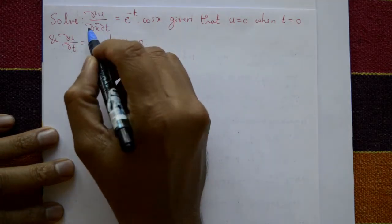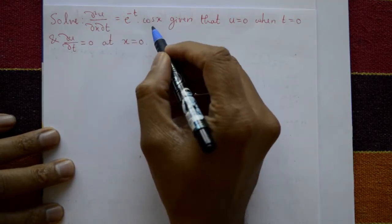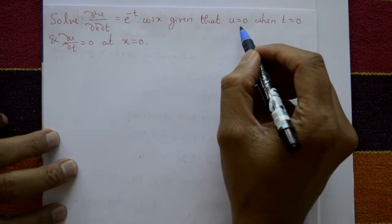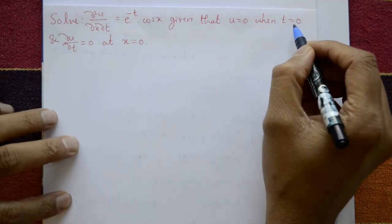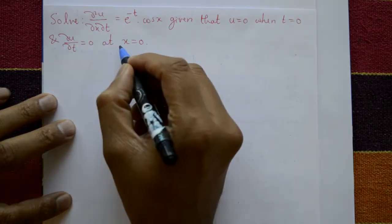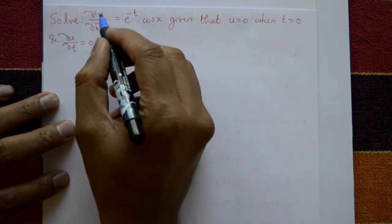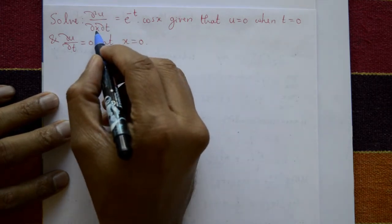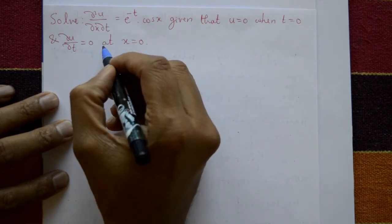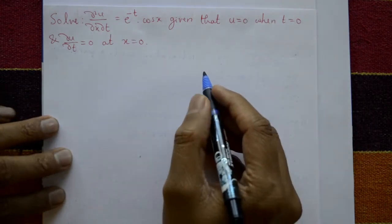Solve ∂²u/∂x∂t = e^(-t)·cos(x), given that u = 0 at t = 0, and ∂u/∂t = 0 at x = 0. For the given PDE, first integrate with respect to x, then with respect to t. Then use the conditions to get the solution.